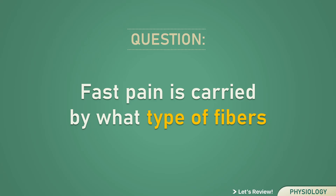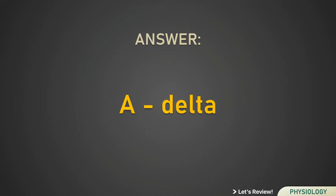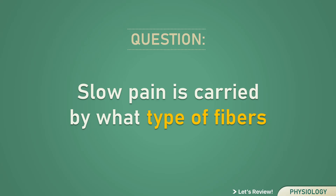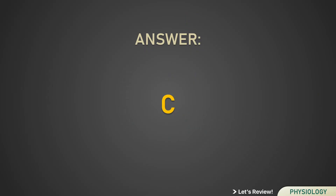Fast pain is carried by what type of fibers? A Delta. Slow pain is carried by what type of fibers? C fibers.